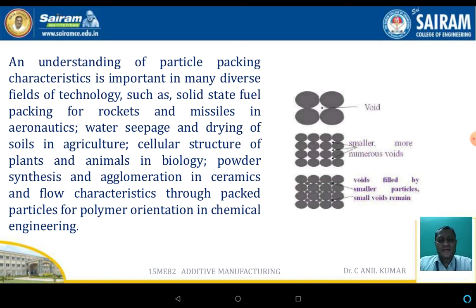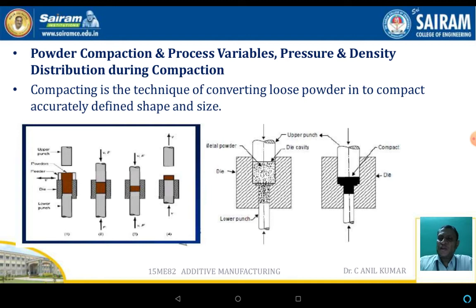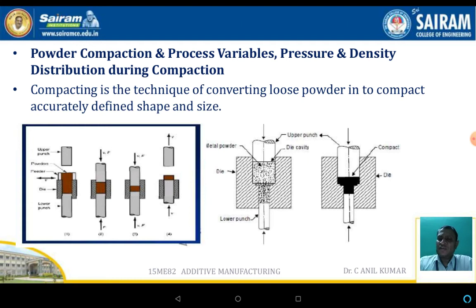For example, if the particle size is too big, the void between particles is also large; if the particle size is small, the void between particles will also be small. Powder compaction process variables include pressure, density distribution, and compaction. Compacting is the technique of converting loose powder into a compact of accurately defined shape and size.